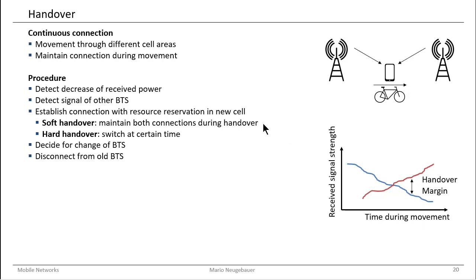The first is soft handover, which means that you maintain a connection to both base transceiver stations during your handover. You route your call to both antennas, and only when the first antenna is so far away that its signal is received with only a small amount of power do you finally cut the connection to the first cell and are handed over completely to the second cell. For a certain amount of time you maintain a connection to both base transceiver stations.